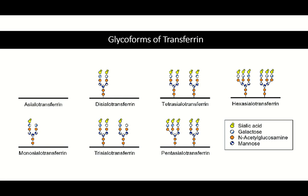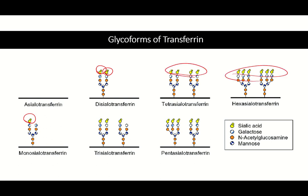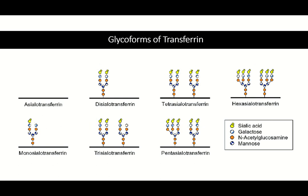In asialo-transferrin, you are not seeing any sialic acid or any oligosaccharide chain. In disialo, you are seeing 2 sialic acid residues. Sialic acid is the terminal sugar in the glycoprotein. Here you see 2 sialic acids; here 1 — so it is monosialo. There is also tetra, hexa, penta, and trisialo forms.